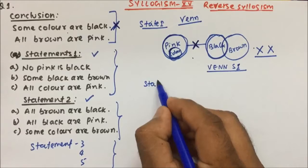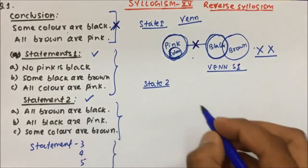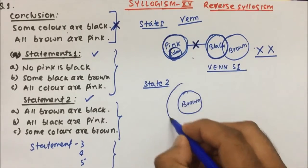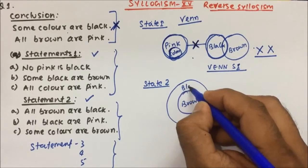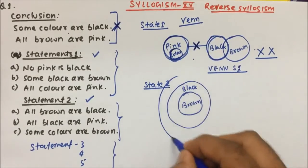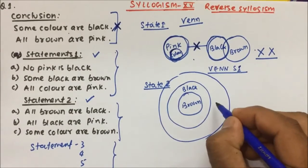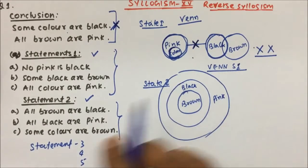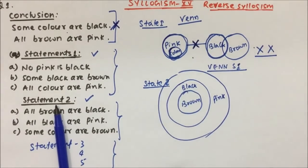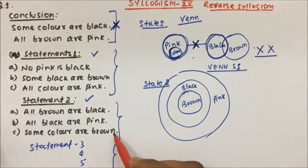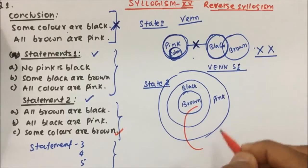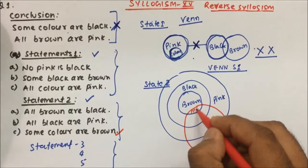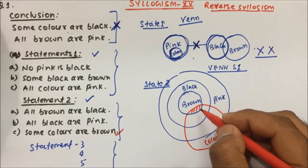For statement 2 we will draw the Venn diagram. All brown are black — so whatever brown we have is inside black. And all black are pink — so whatever black there is, that is inside pink. And some color are brown — I will use another marker for that. So some part of color will be brown, meaning some color is brown and some brown is color.